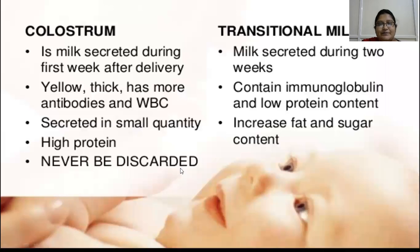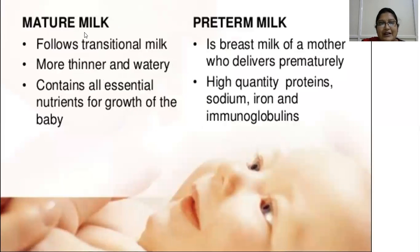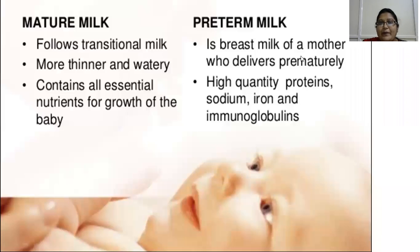Transitional milk is secreted during the two weeks after three days; it contains immunoglobulins, low protein content, and increased fat and sugar content. Mature milk follows transitional milk — it is thinner and more watery and contains all essential nutrients for growth until six months. Preterm milk is the breast milk of a mother who delivers before 37 weeks; it contains high quantities of proteins, sodium, iron, and immunoglobulins with low osmolarity to suit the preterm's needs.